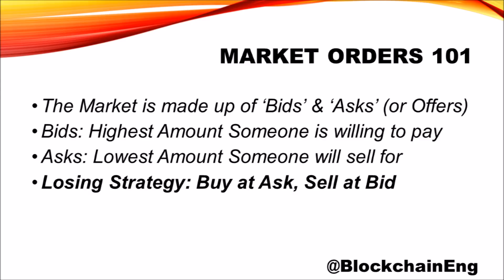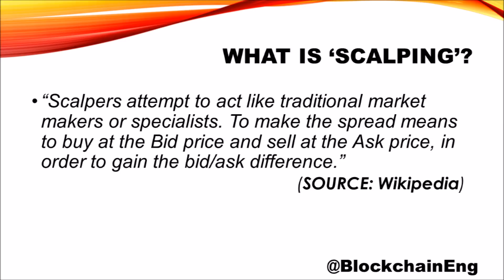There's a lot more information on the internet if you'd like to learn about this, but essentially the market is made up of bids and asks. Bids are the highest amount someone is willing to pay for an item such as a cryptocurrency, and an ask is the lowest amount someone will sell it for. A losing strategy would be to buy at the asking price and sell at the bid price, because there's always a difference between the two in any market.